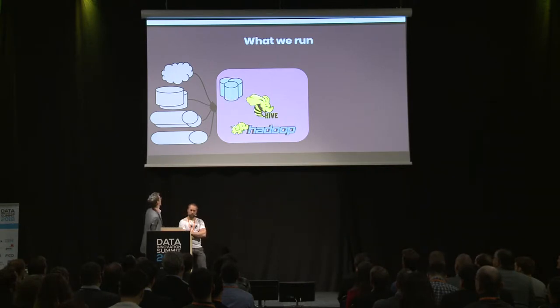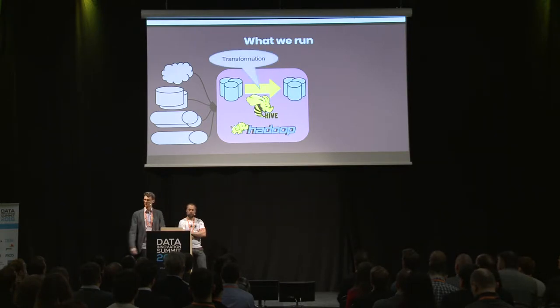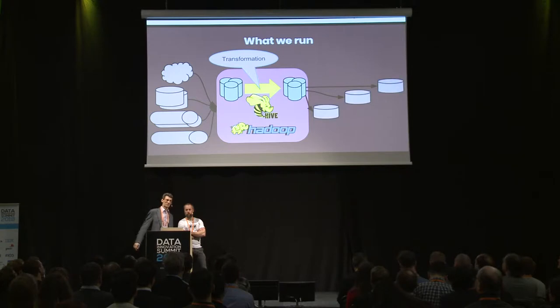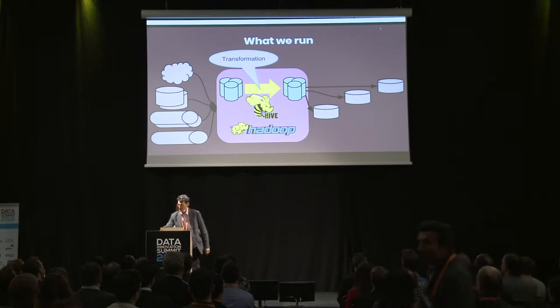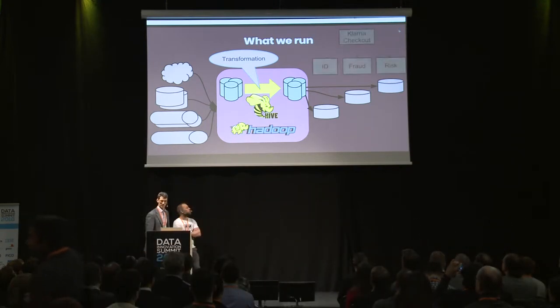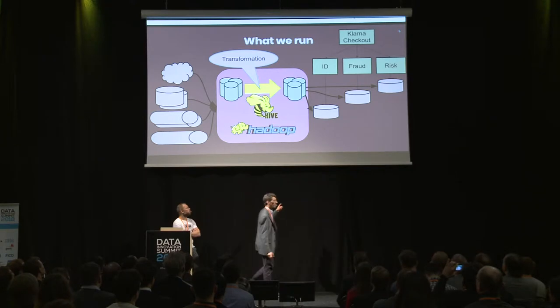All these data sources land on the left-hand side of the Hadoop distributed file system. Transformations are typically owned not by the data infra team but by the data consumers — we'll talk more about those in a bit. The results of transformations end up on the right-hand side of the Hadoop distributed file system, and some of these result datasets are exported to other systems that facilitate lookup, including mission-critical systems for Klarna.